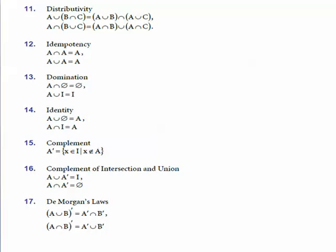Identity rule states that A union of null set gives A, and A intersection of universal set gives A. Complement, written as A dash (A'), is equal to the set of all x where x belongs to the universal set but x is not an element of set A.